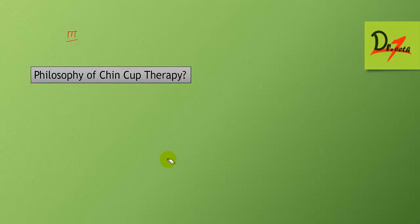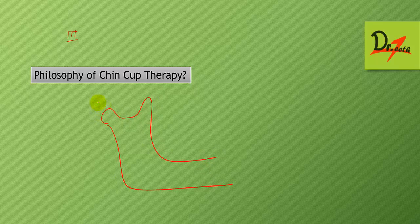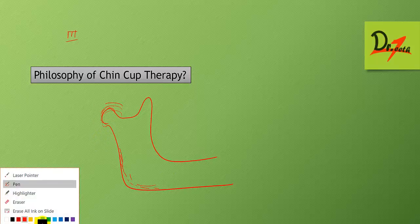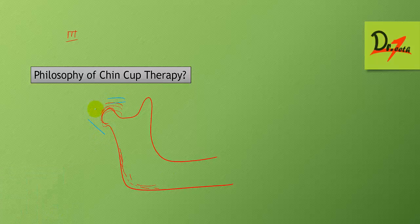The philosophy of chin cup therapy: the mandible grows by apposition of bone at the condyle and along the free posterior border. Condylar growth is in response to the translation of the surrounding tissues. The chin cup therapy is used to restrict this growth of the mandible by applying a force at the chin.